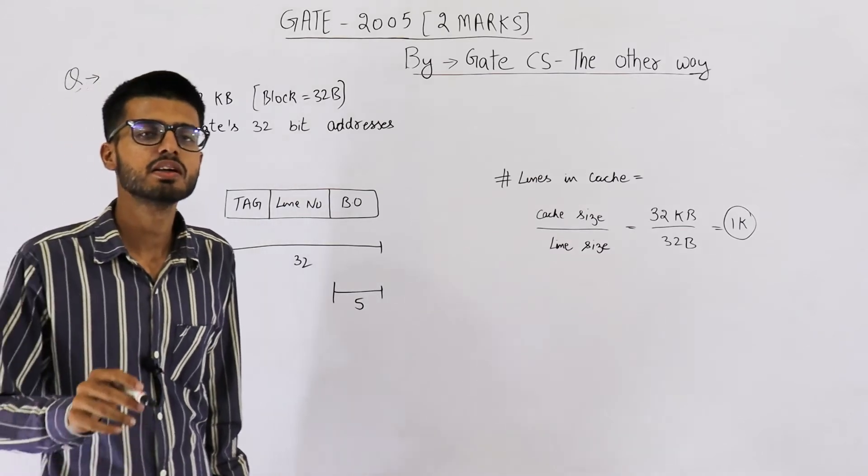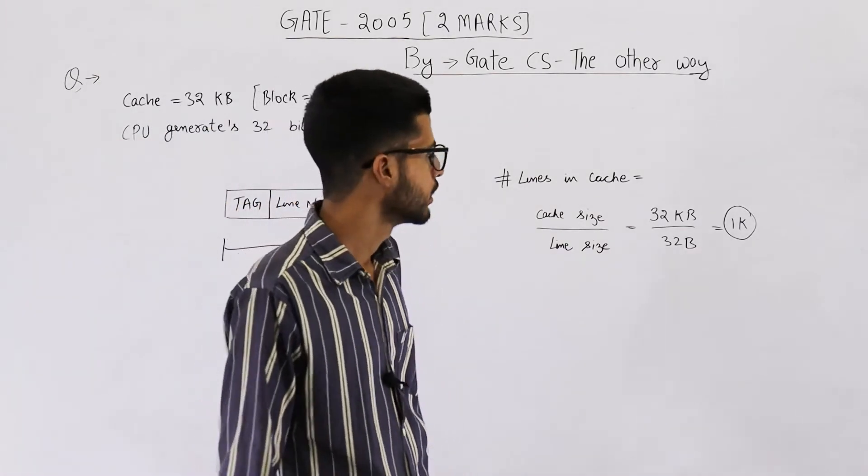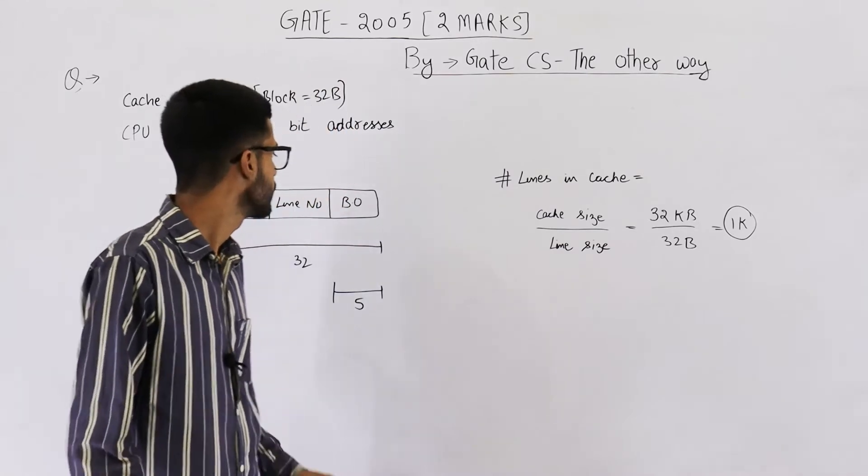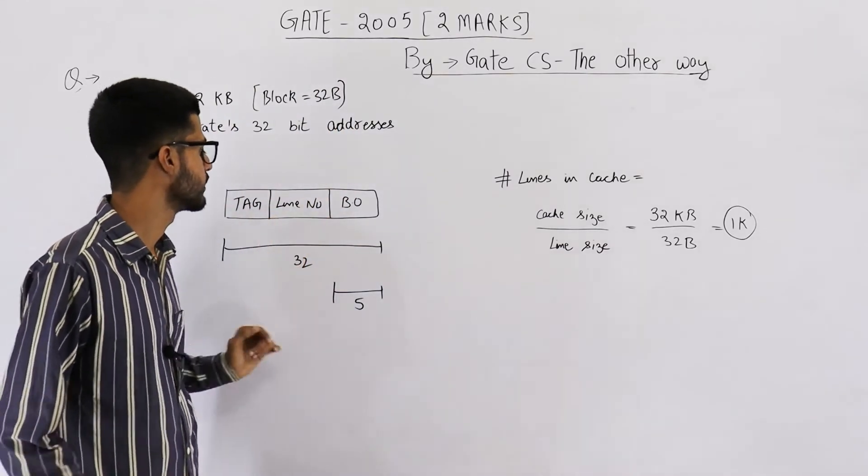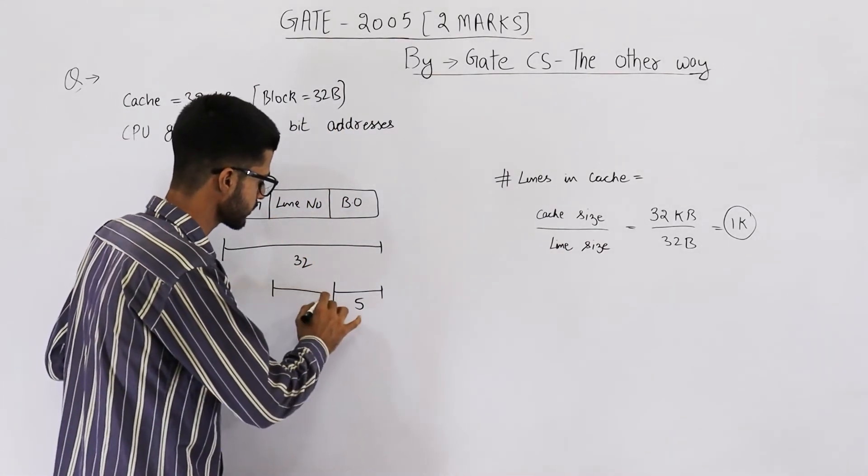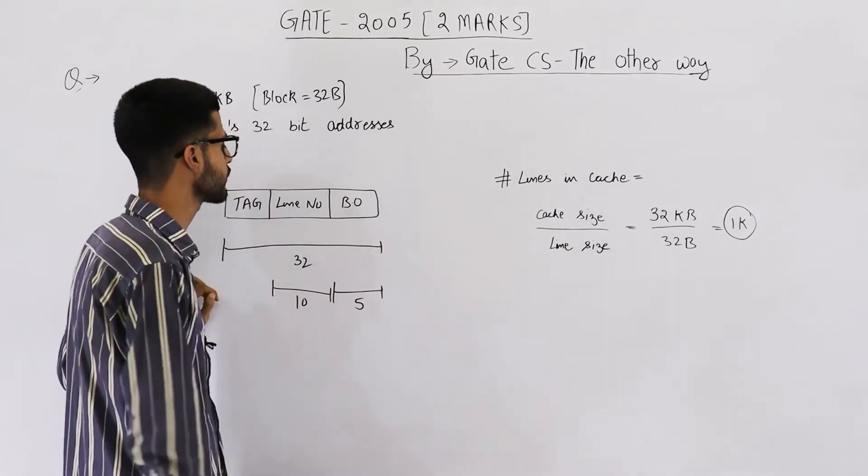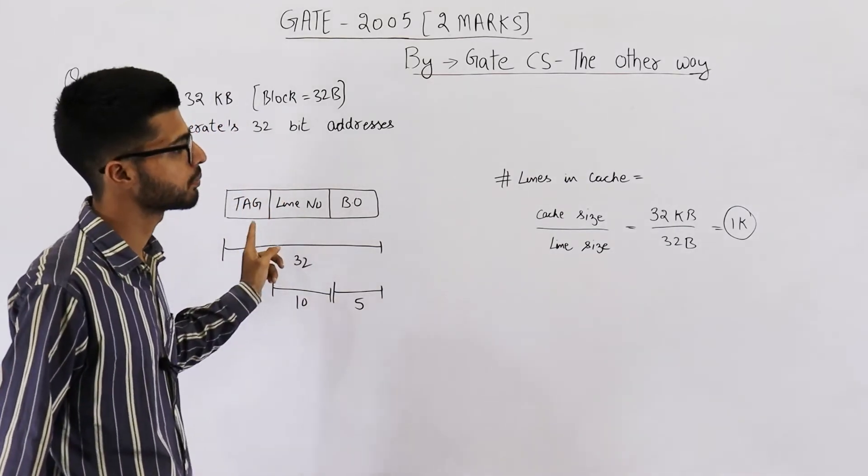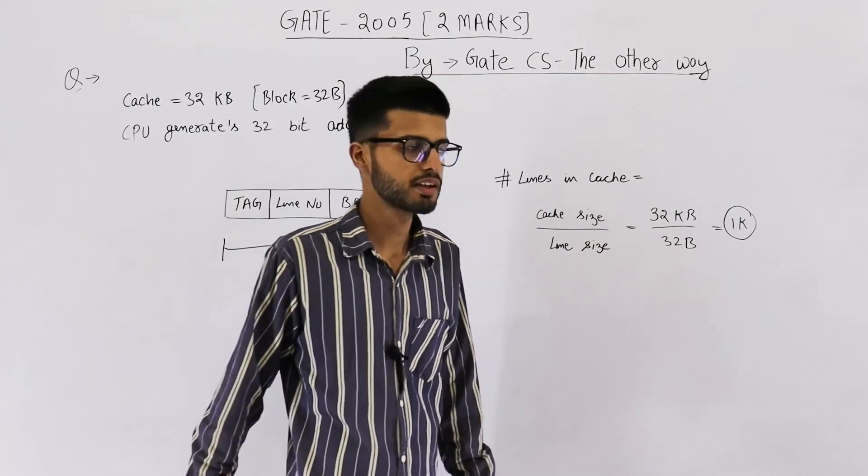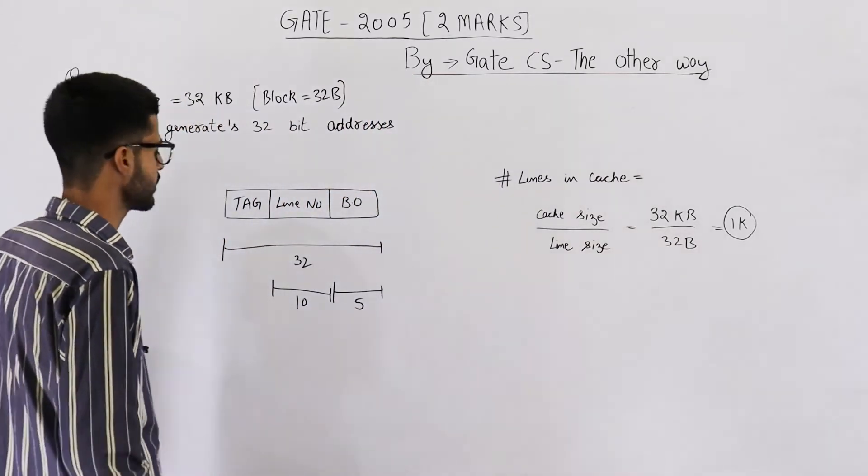That means we have a total of 1K lines in cache, which is 1024. Now to identify one of these lines, you need 10 bits. So line number field, because its purpose is identifying one of the total number of lines in cache, it will be 10 bits.